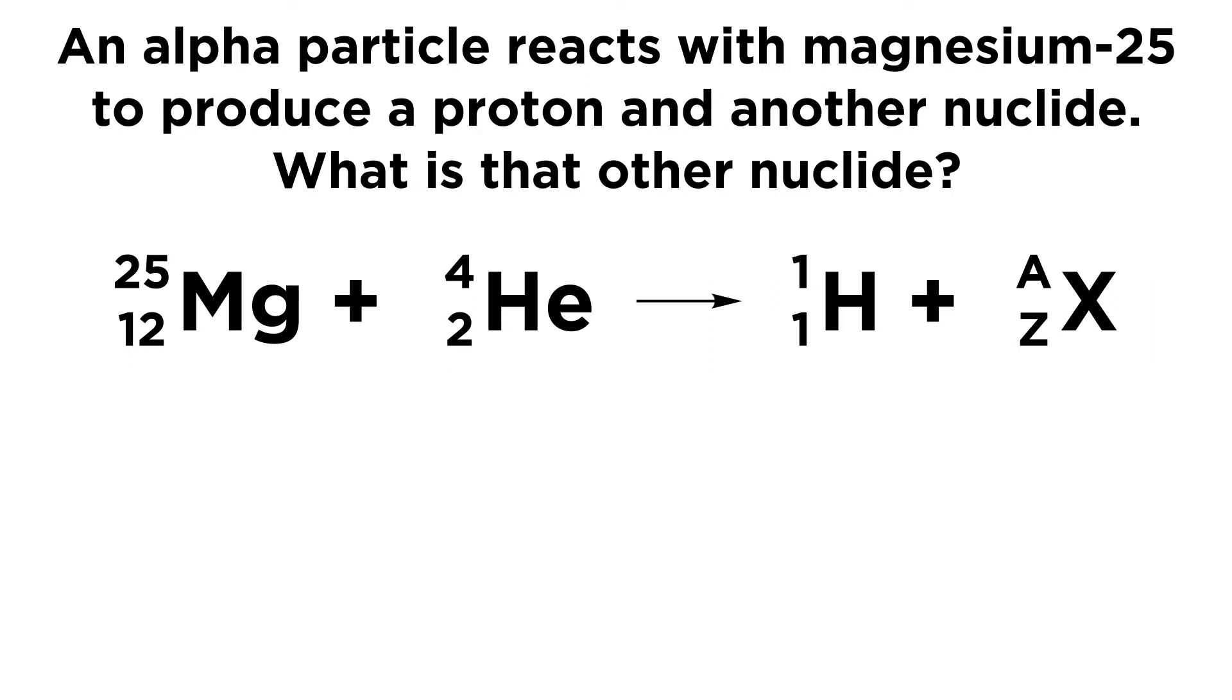Now, we said that we are going to produce a proton, and what is a proton but a hydrogen nucleus? We know that every hydrogen atom will have one proton in its nucleus, so we can write H for hydrogen,